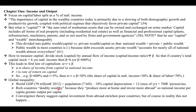He says rich countries are doubly wealthy because they produce more at home and invest more abroad, so national income per capita is greater than output per capita. Convergence theory suggests that capital investment from abroad would hypothetically enrich poor countries, but in reality this is not happening.